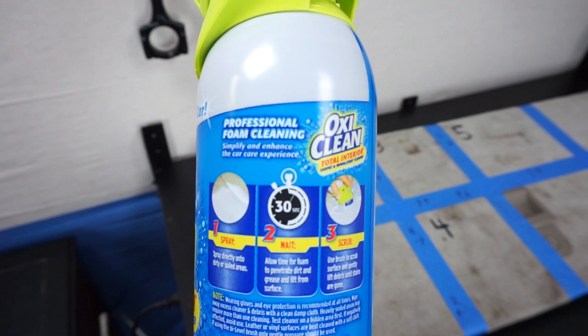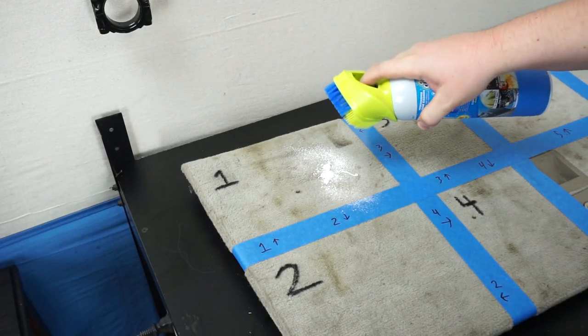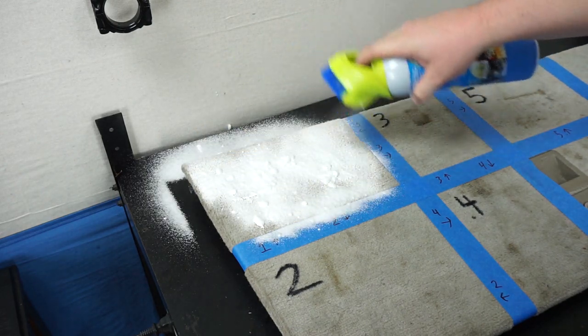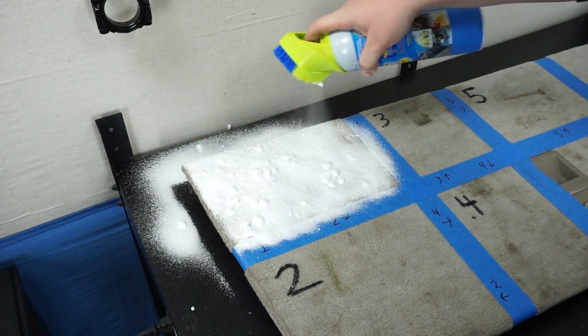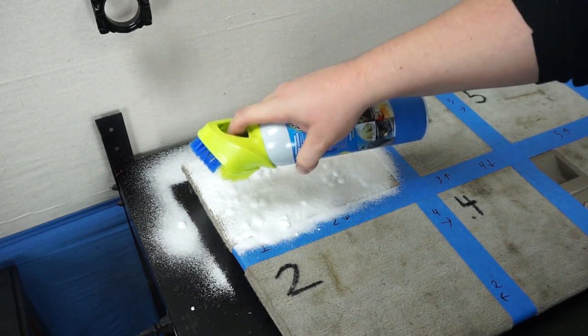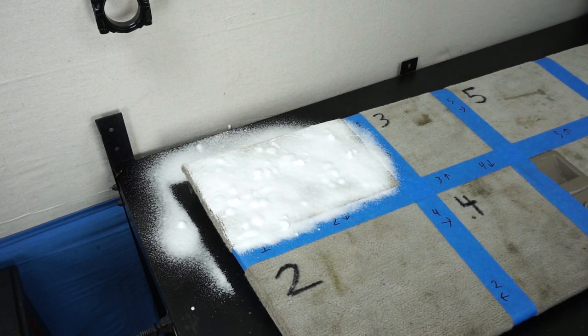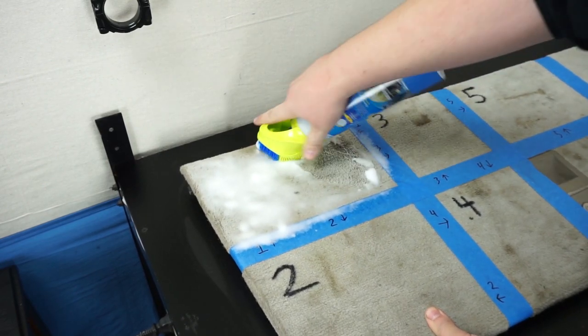The directions on OxyClean say to spray directly onto the dirty areas, wait about 30 seconds, then start scrubbing it with the brush. The brush was actually really awkward as this one doesn't come off of the can.